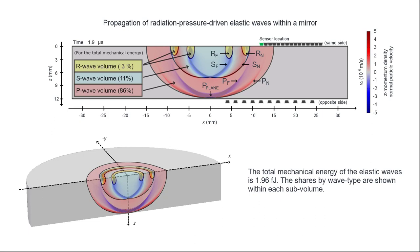3% of the mechanical energy resides in the Rayleigh wave volume highlighted in yellow. 11% resides in the secondary wave volume highlighted in blue and 86% resides in the primary wave volume.